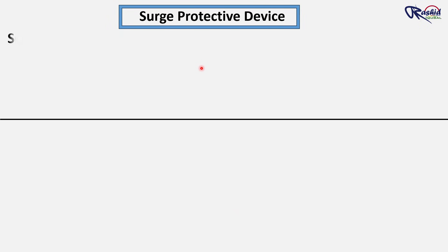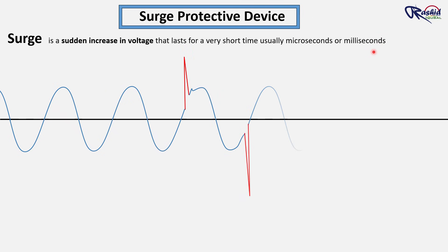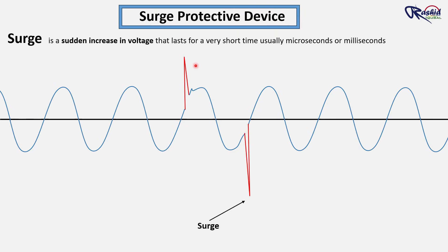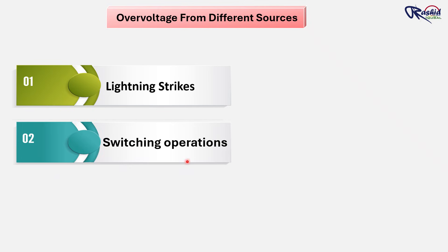Before we understand SPD, first we need to know what is a surge. A surge is a sudden increase in voltage that lasts for a very short time, usually in microseconds or milliseconds. As you can see here, this is a surge for a very short interval of time. This surge or overvoltage can come from different sources, like lightning strike — either direct or indirect — or switching operation.